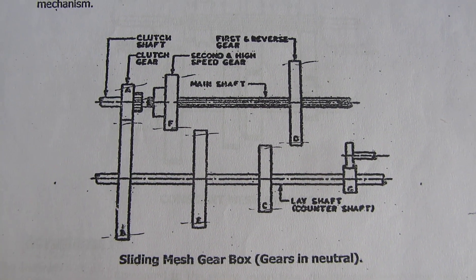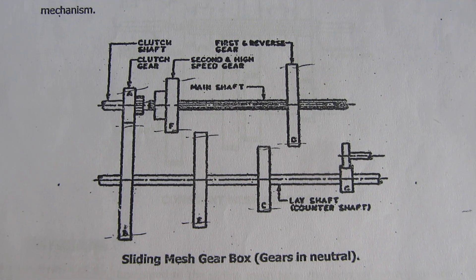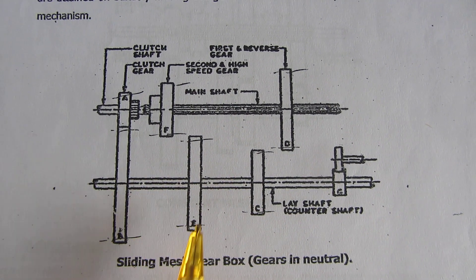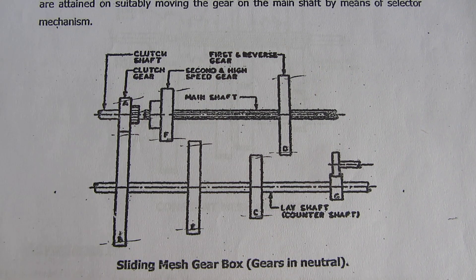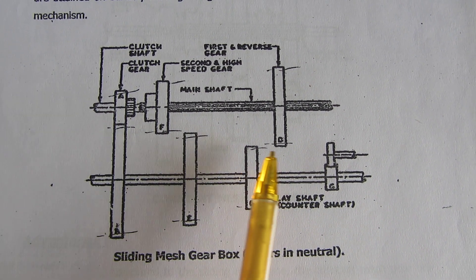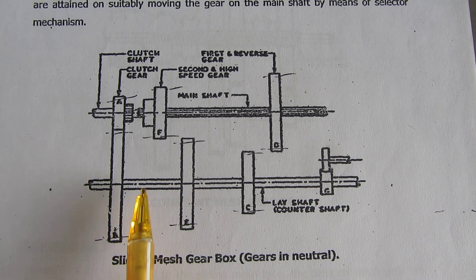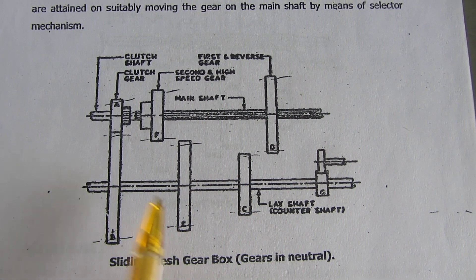This is a schematic diagram of a sliding mesh gearbox. It is one of the simplest types of gearbox. Here, gears slide to mesh and supply power, so it is called a sliding mesh gearbox. But it is rarely used due to sliding of the gear. Sudden engagement happens, which causes breakage of teeth.